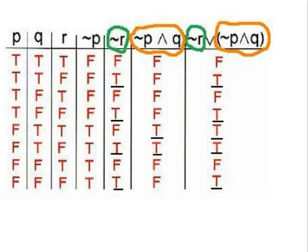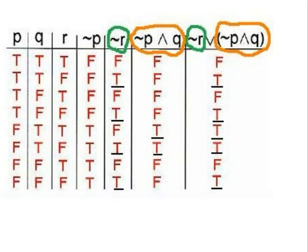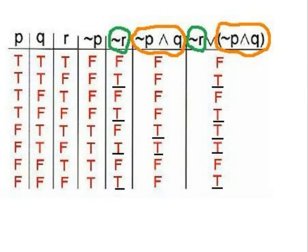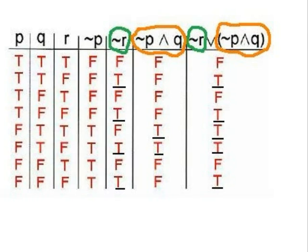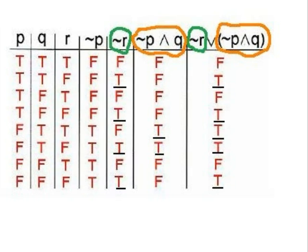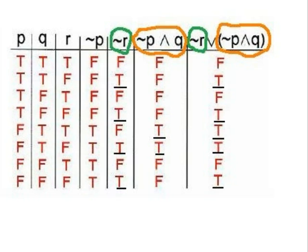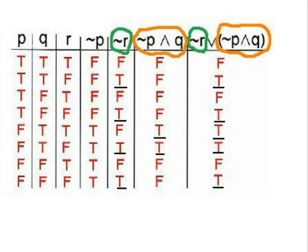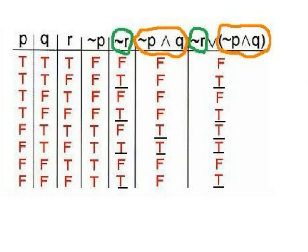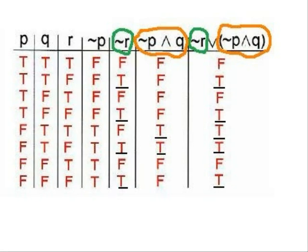Now we are ready to find the truth values for the entire compound statement. We already found the truth values for NOT P and Q and for NOT R. Using the corresponding columns and applying the OR rule — an OR statement is true when one or both statements are true — trues exist in rows 2, 4, 5, 6, and 8. Therefore, the entire compound statement is true in rows 2, 4, 5, 6, and 8, and false everywhere else.